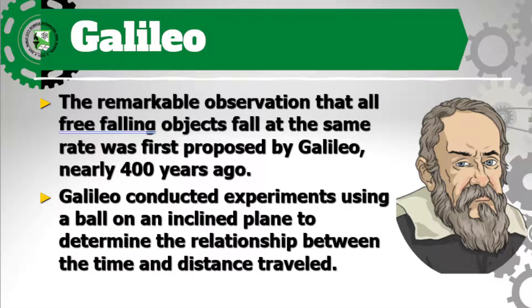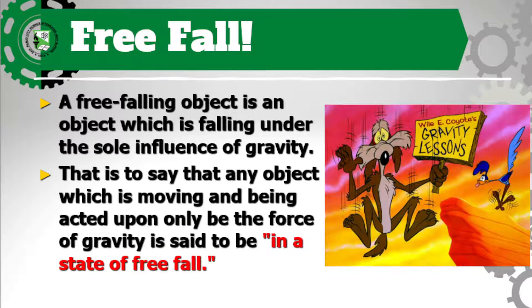Let's go back to the history of free fall first. The remarkable observation that all free-falling objects fall at the same rate was first proposed by Galileo Galilei nearly 400 years ago. He conducted an experiment using a ball on an inclined plane to determine the relationship between time and distance traveled. A free-falling object is an object falling under the sole influence of gravity — we do not consider the factor of air resistance. Any object which is moving and being acted upon only by the force of gravity is said to be in the state of free fall.